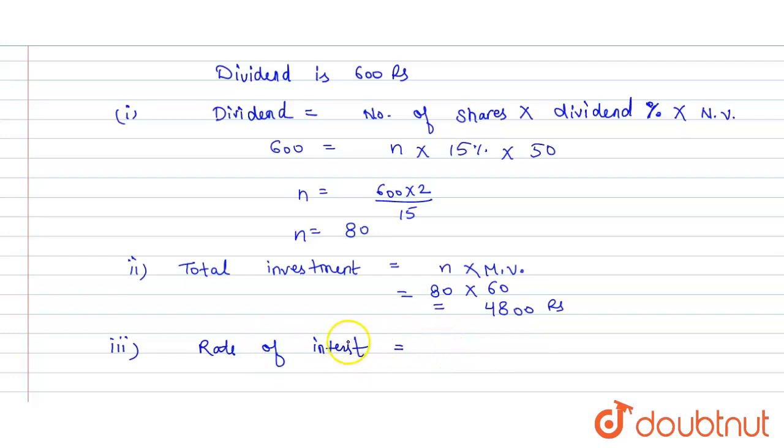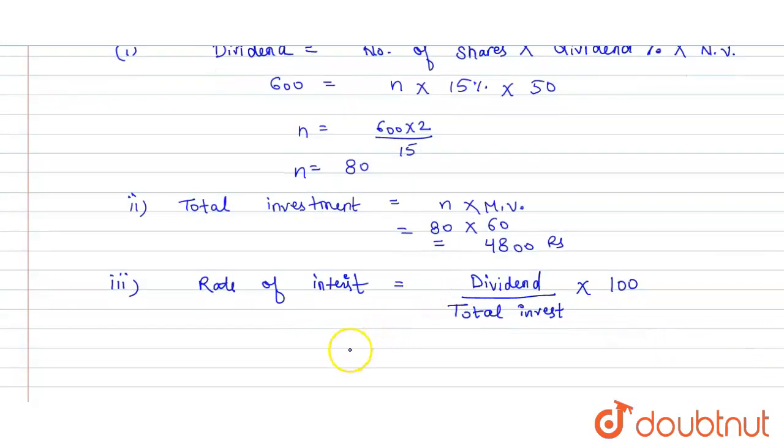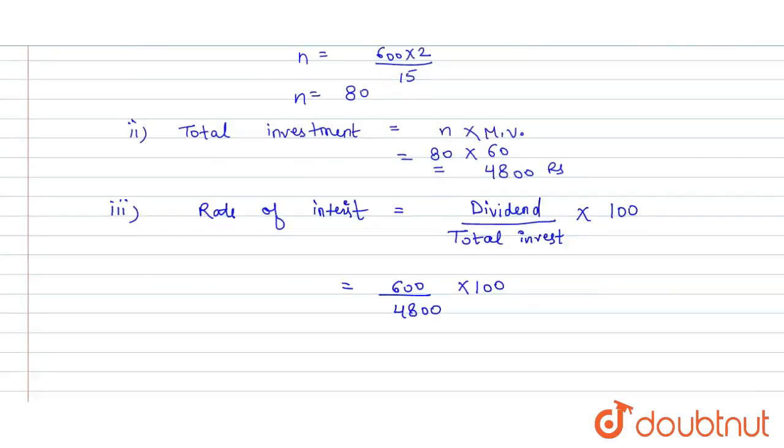Dividend divided by total investment multiplied by 100. So we have dividend equals 600, total investment is 4,800, multiplied by 100. Solving it, we get the rate of interest as 12.5%, which is the desired answer for the given question.